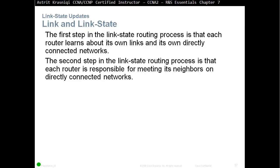The second step in the link state routing process is that each router is responsible for meeting its neighbors on directly connected networks. The routers will start exchanging hello messages, meeting their neighbors, and going through the process of determining if they can become neighbors — for example, checking if they are in the same area. They have to meet their neighbors using hello messages and maintain awareness that neighbors are still there.